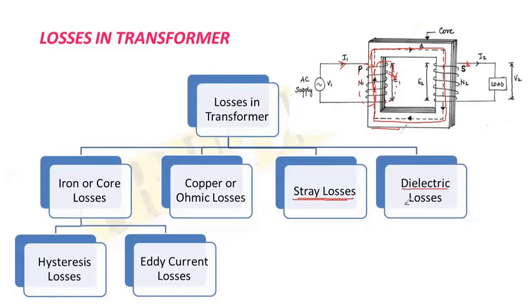There is one more type of loss called dielectric losses. These occur in the insulating parts of the transformer, like the insulation used between the windings and the oil used as a dielectric or insulation. In this video, we will focus more on the two types — iron losses and copper losses — in detail, and see the reason for these losses and how we can minimize them.